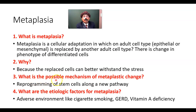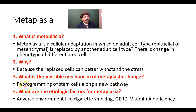What is the possible mechanism of metaplastic change? Why is one type of cell converted into another type of cell? This happens due to reprogramming of stem cells along a new pathway — there will be reprogramming of the stem cells.